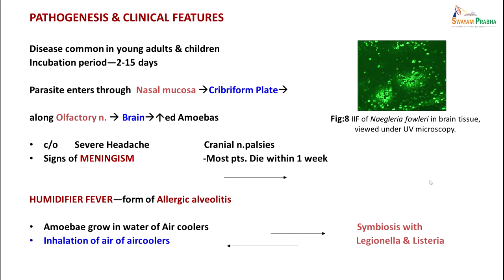Regarding pathogenesis, the disease is commonly seen in young children and young adults and the incubation period is up to 2 to 15 days. The parasite enters through the nasal mucosa, goes to the cribriform plate, along the olfactory nerve to the brain, and causes increased amoebae formation in the brain which destroys the brain tissue. The patient will complain of severe headache, signs of meningism, cranial nerve palsies, and may die within a week. Naegleria fowleri has been demonstrated in brain tissue under UV microscopy. It can also cause humidifier fever, a form of allergic alveolitis, due to amoebae which grow in air coolers - inhalation of air from coolers can lead to this infection, usually in symbiosis with Legionella and Listeria.